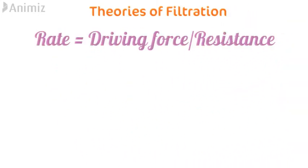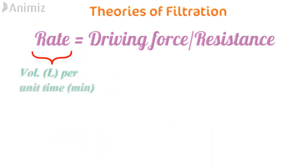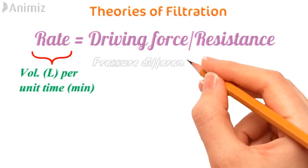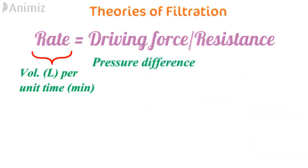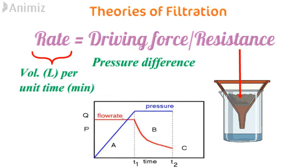Let us understand some theories of filtration. The rate of filtration equals the driving force divided by the resistance. The rate is expressed as the volume of filtrate in liters per unit time. The driving force is the pressure difference across the filtration medium, and the resistance is offered by the deposition of solid on the filtration medium. As filtration time increases, resistance also increases as more solids deposit on the filter media and filtration rate decreases. Therefore, filtration is usually done at a constant pressure or at a constant flow rate.